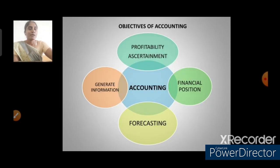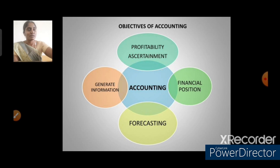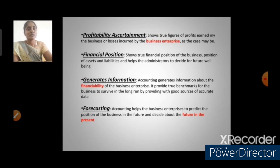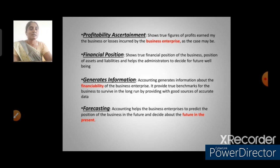Next we are going to see about the objectives of accounting: profitability ascertainment, ascertainment of financial position, forecasting, and general information. The first objective is profitability ascertainment — the main aim of preparing accounting is to know the profit of the business. It shows the figures of profit earned or losses incurred by the business enterprise.